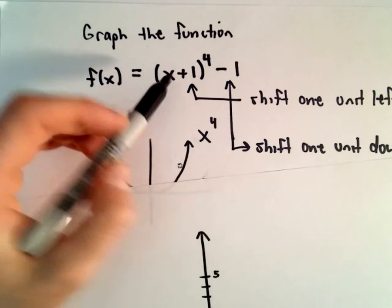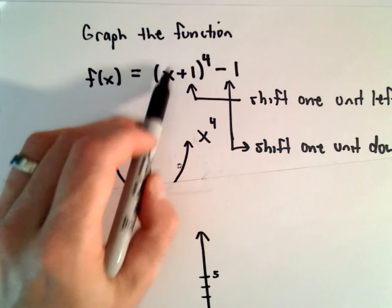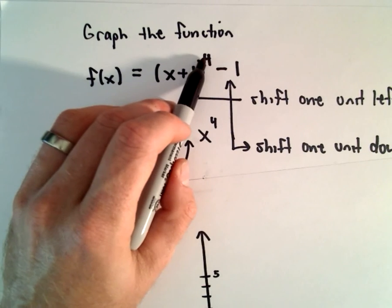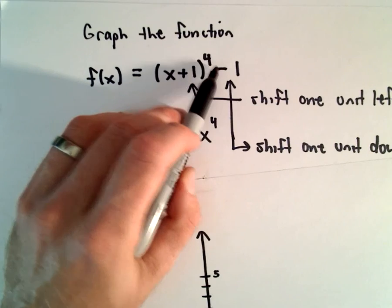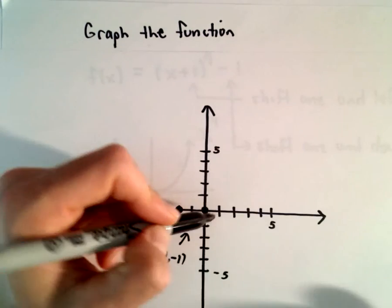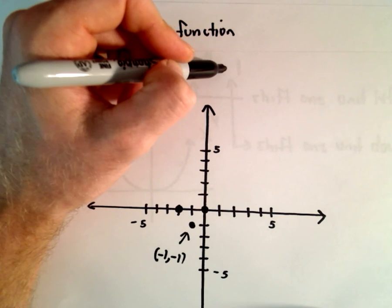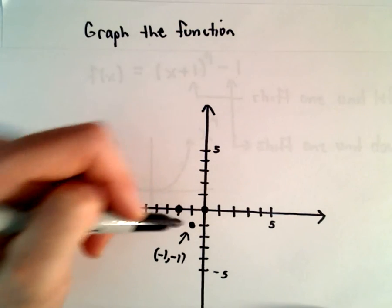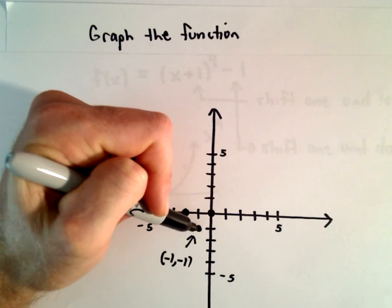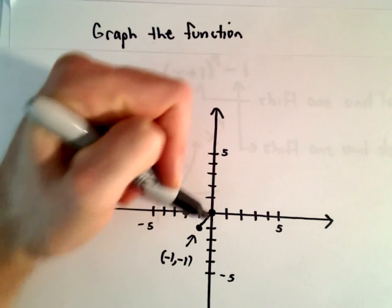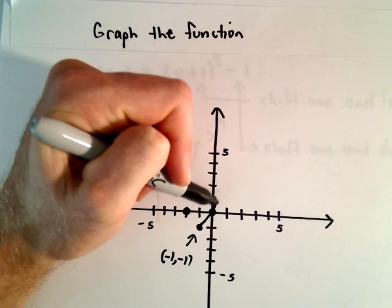Notice if we plug in x=1, we would have 1+1, which is 2. 2^4 is going to be 16, minus 1. So at x=1, we should actually already be way up here at y=15. My graph is going to get pretty steep, pretty quickly.